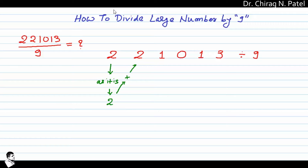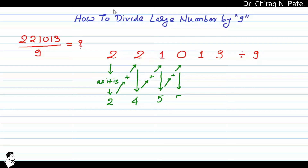First, put the first digit as it is — that number is 2. Then make a summation of that digit with the next: 2 plus 2 equals 4. Then sum that 4 with the next number, which is 1, so the answer is 5. Again, sum that 5 with the next value, which is 0, so the next answer is still 5.